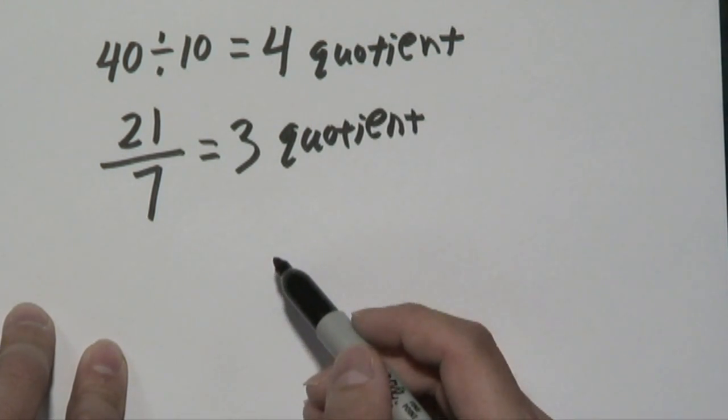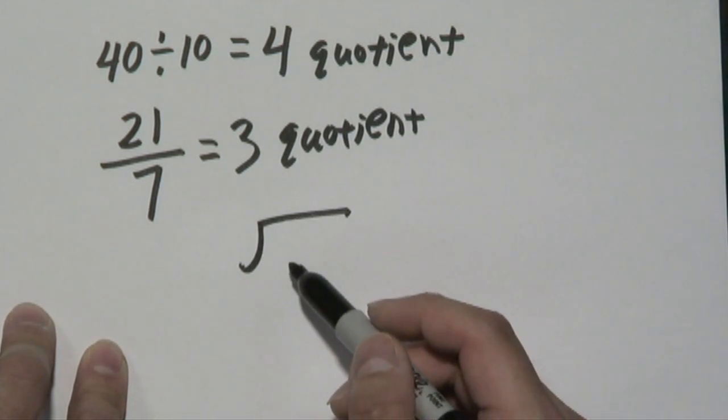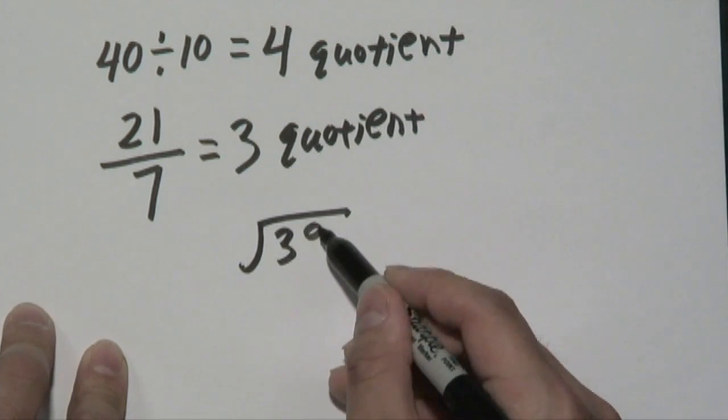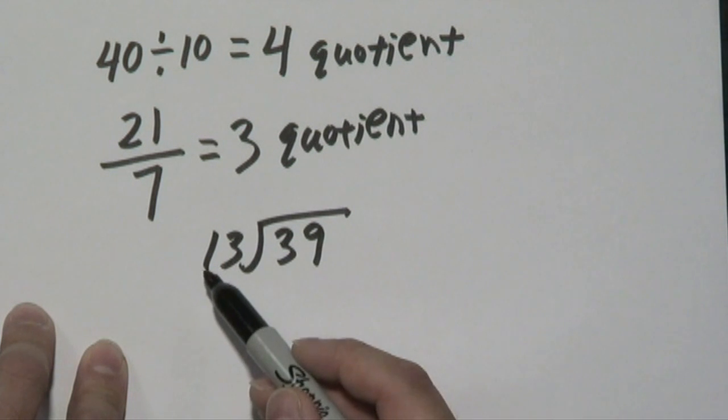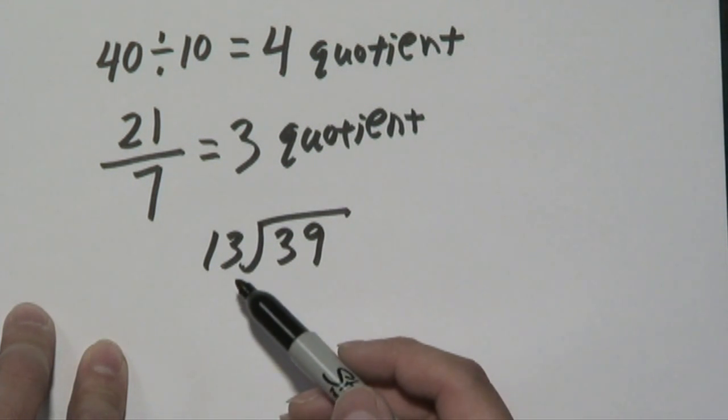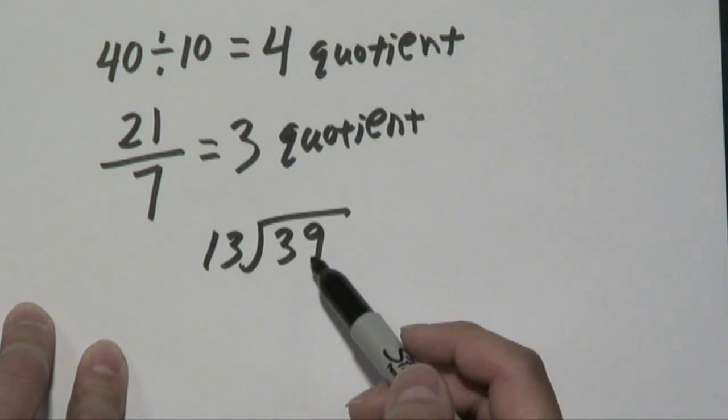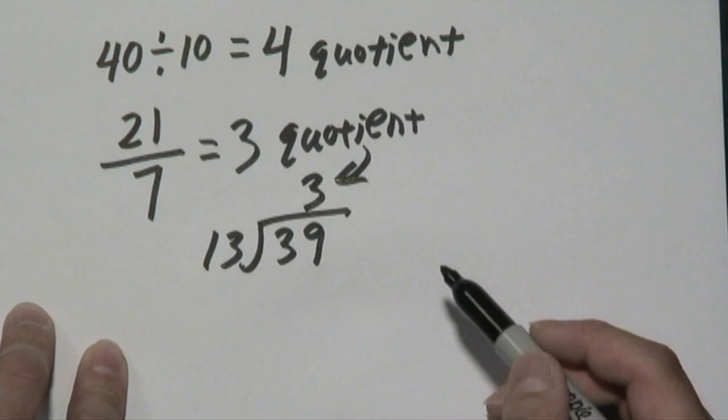And lastly, you can have division written possibly this way, where it's broken up into kind of like a house format, where you might have for instance, 39 divided by 13. Now 39 is your dividend, 13 is your divisor, but again you're concerned about the answer which is going to be your quotient. Now 13 going into 39 is going to be 3 times, and that is also your quotient.